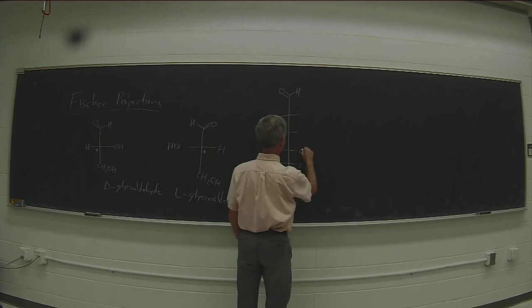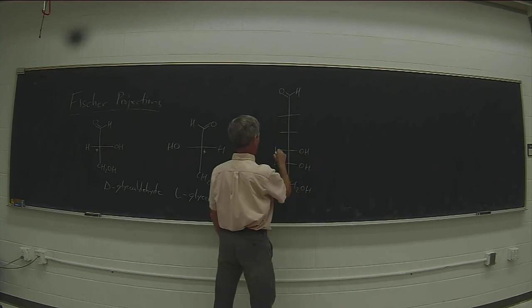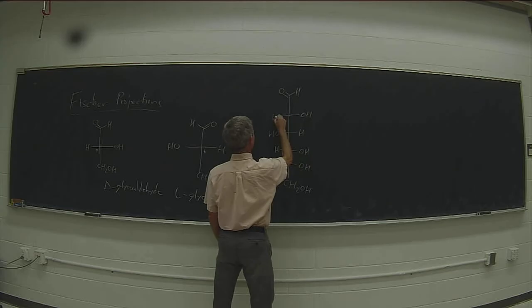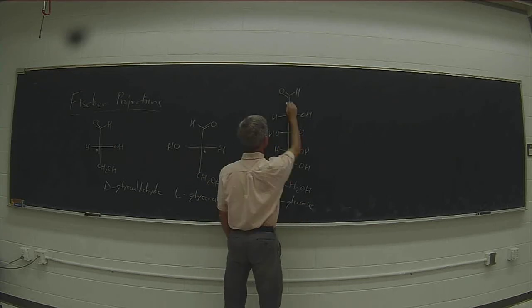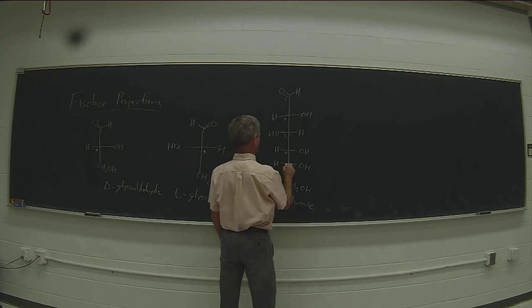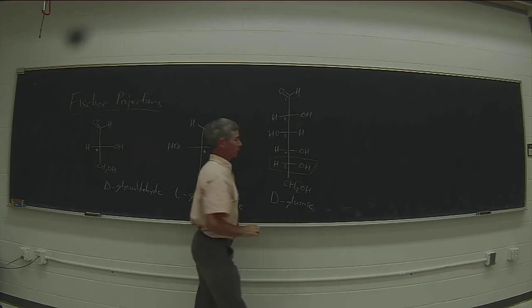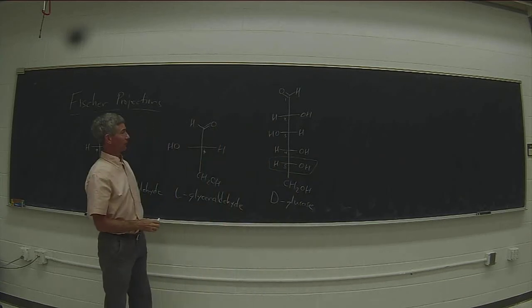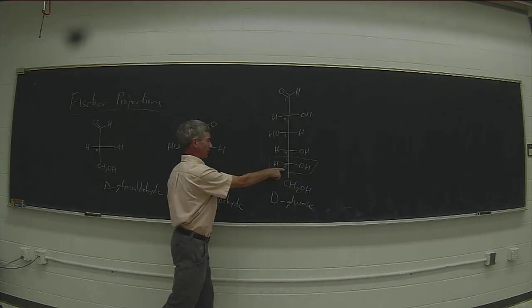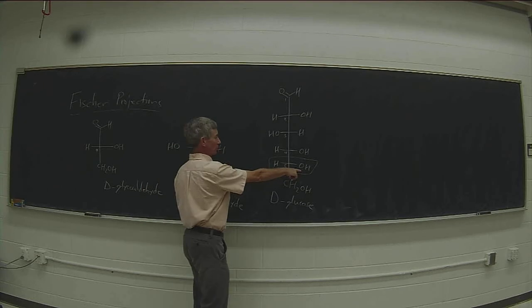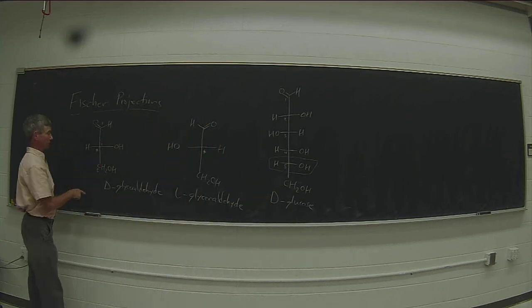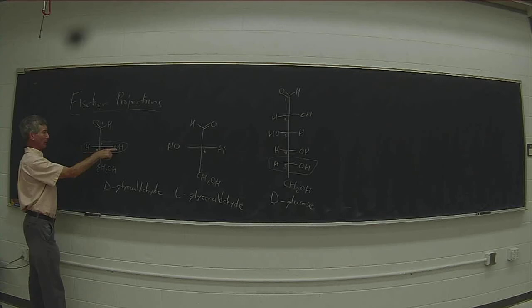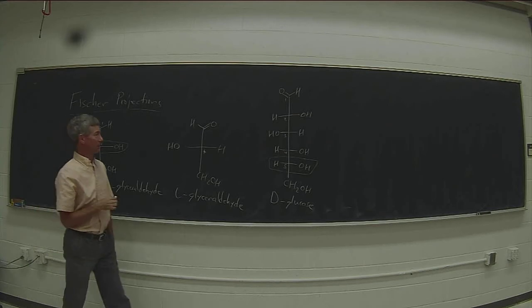which is an aldohexose that has six carbons and four chirocenters. The D isomer of glucose looks like this, where the highest-numbered chirocenter, carbon 5, has the OH group on the right — in the same position as the highest-numbered chirocenter of glyceraldehyde, carbon 2, where the OH group is on the right.